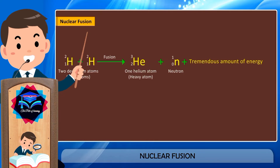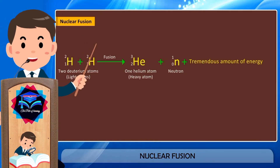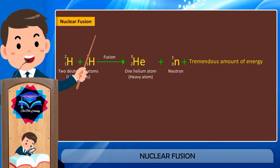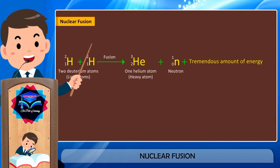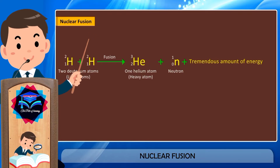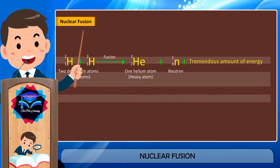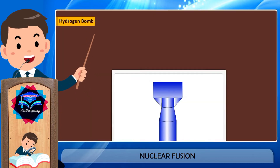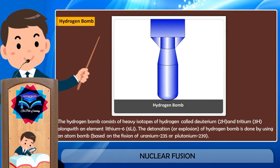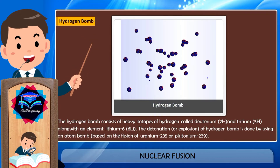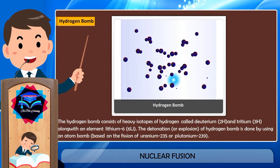A fusion process is just the opposite of a fission process. The energy produced in a nuclear fusion reaction is however much more than that produced in a nuclear fission reaction, and has not been controlled so far.